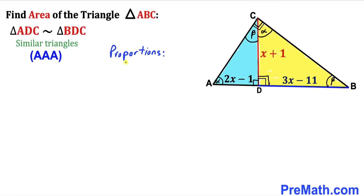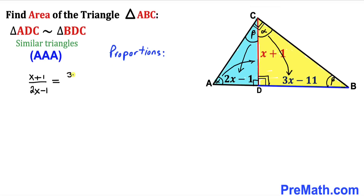Since the triangles are similar, we set up a proportion. The side opposite angle alpha is x plus 1, and the side opposite angle beta in triangle ADC is 2x minus 1. So we write the ratio: (x plus 1) divided by (2x minus 1) equals (3x minus 11) divided by (x plus 1).